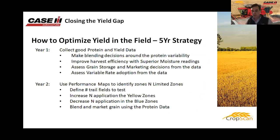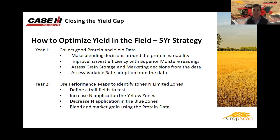To really break it down for growers on the early adopter road: how do we optimize yield? Year one — the best thing you can do is just start. Once the CropScan is installed on your harvester, it's collecting protein and yield data. We can start utilizing that data to make blending decisions, have superior moisture management — especially in higher-risk areas where every hour of harvest counts — and address grain storage and marketing. We can also assess variable rate options from the data.